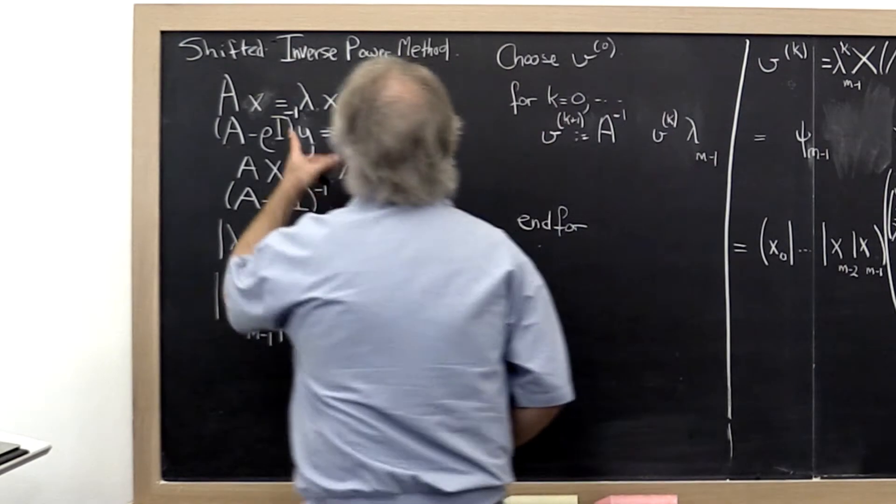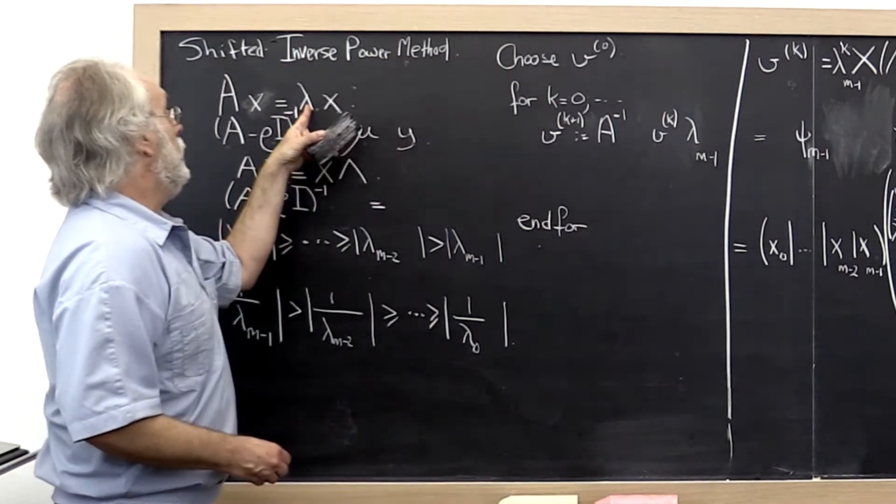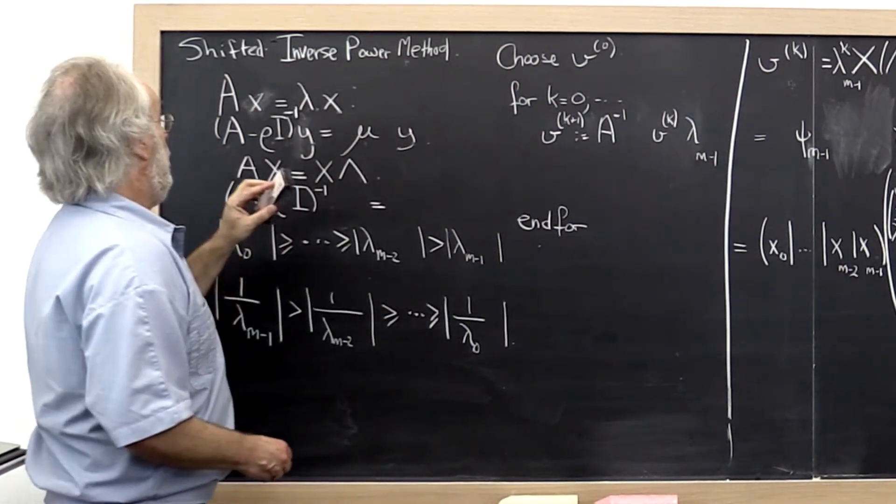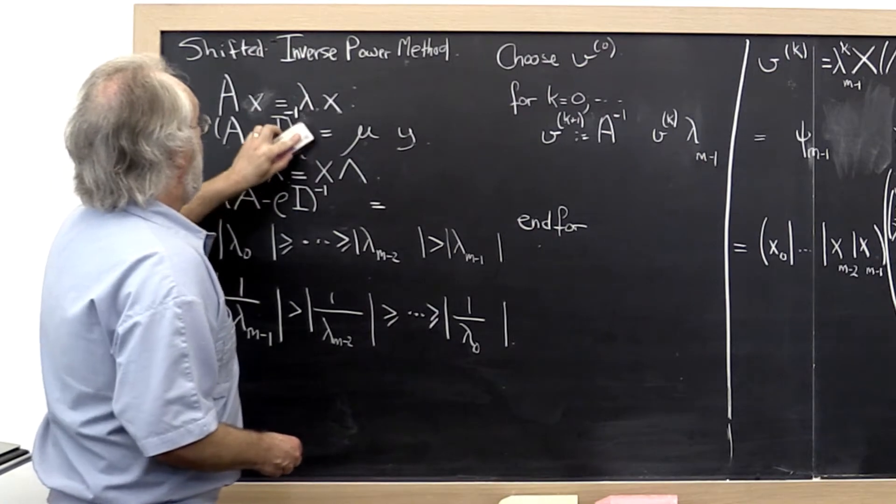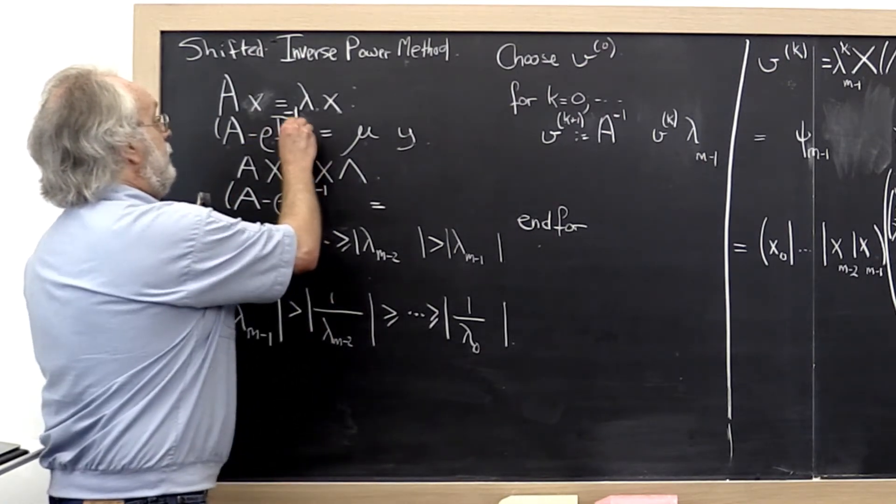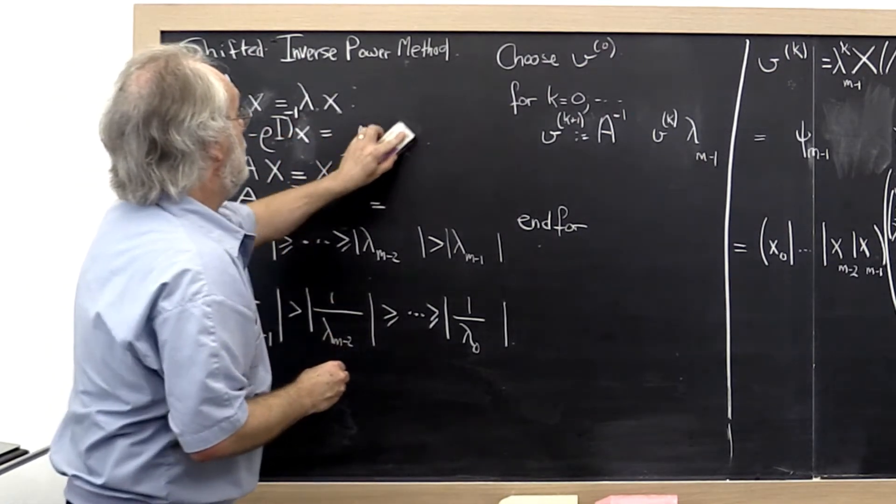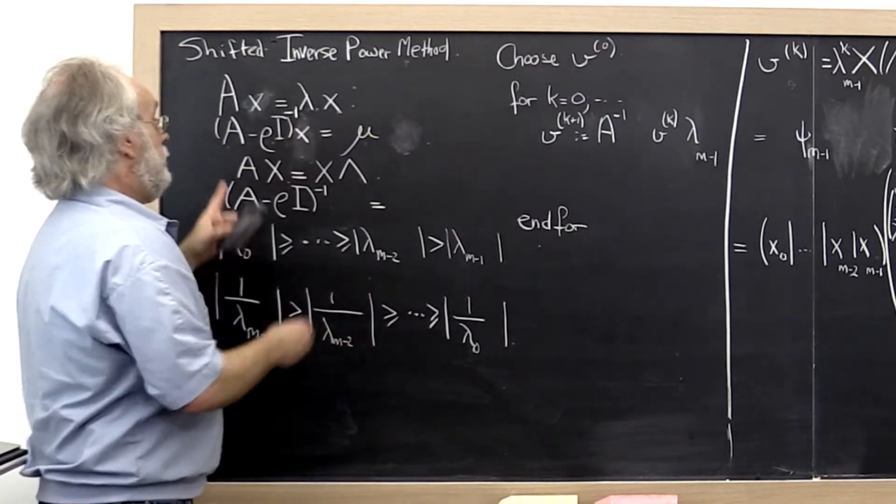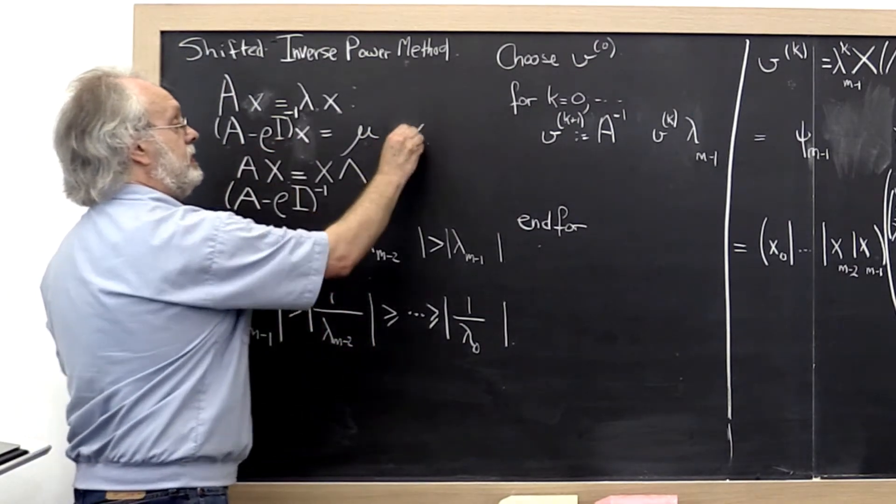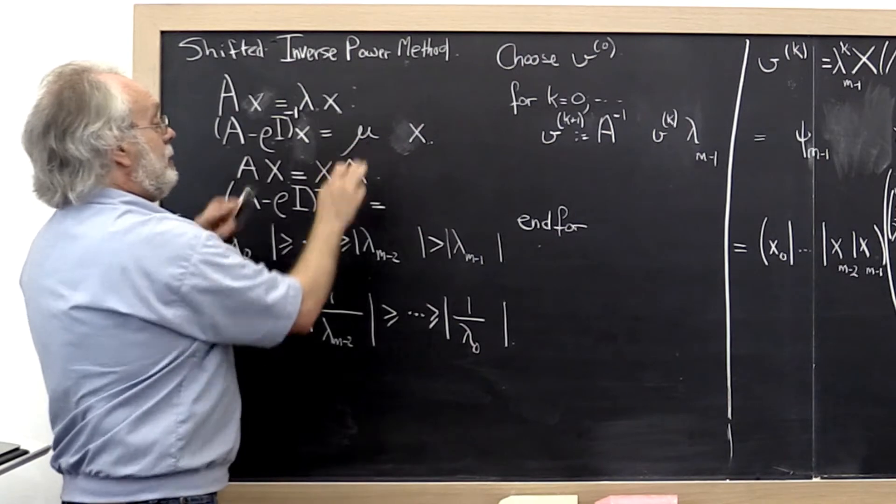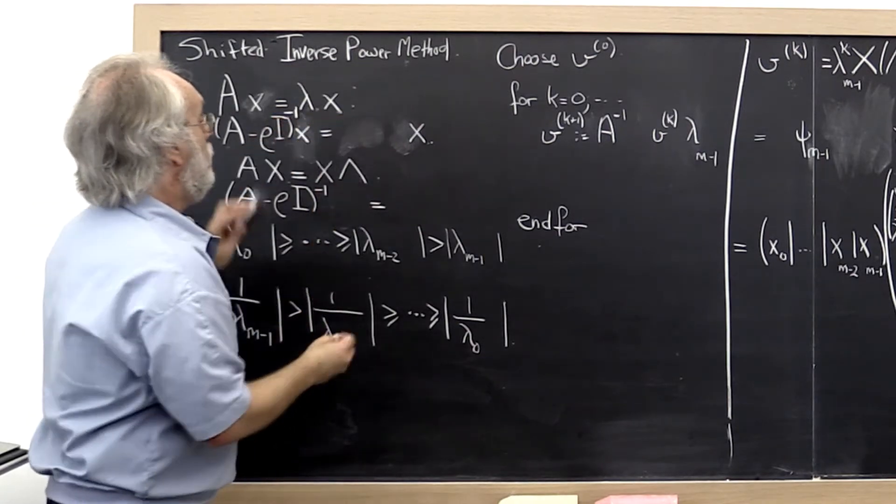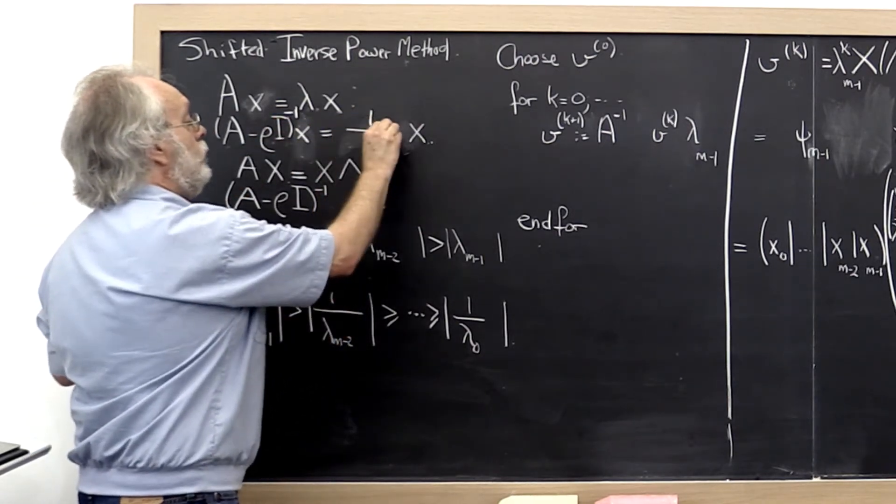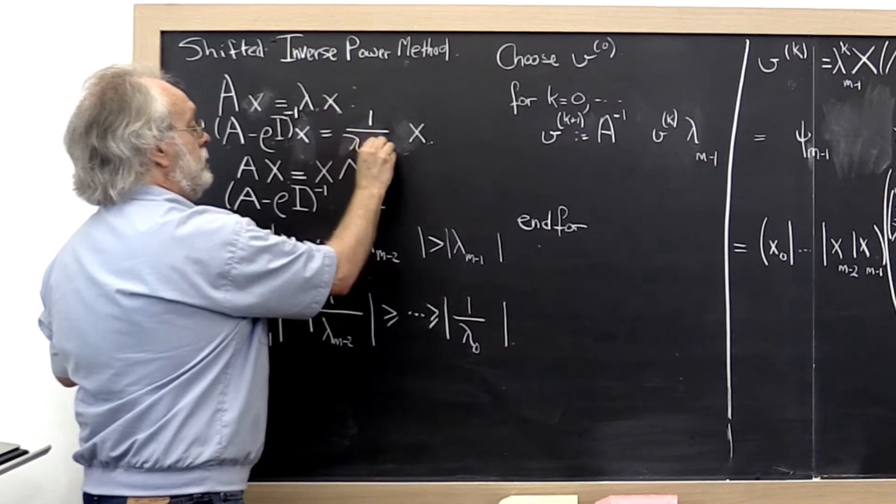So hopefully you found out that if we know an eigenvalue and eigenvector of A, then actually that eigenvector is still an eigenvector of the inverse of this shifted matrix. But the eigenvalue is now replaced by 1 over lambda minus rho.